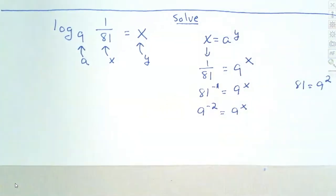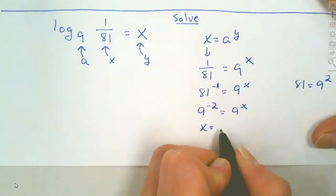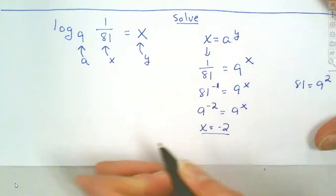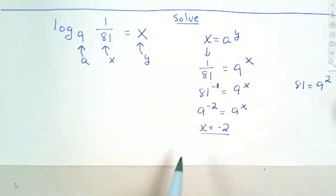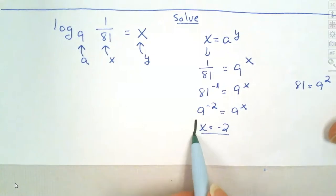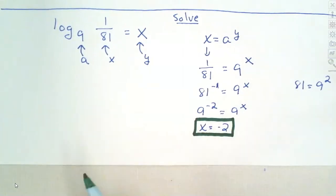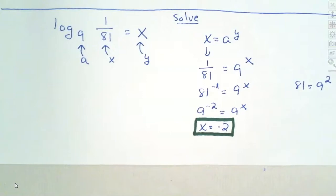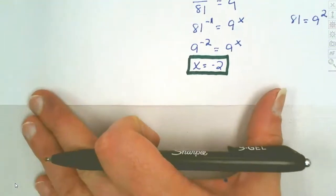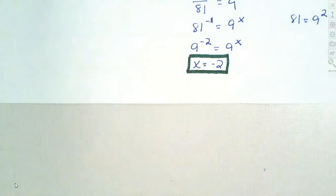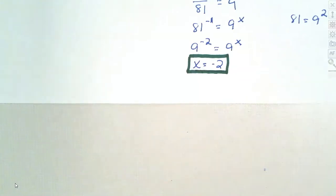The bases are the same, so x equals negative 2. This is almost exactly the same as question 40 on your practice final — just different numbers. Your practice final is already posted in Blackboard. You need to see the key on how these work out. Now we're going to look at some questions on our practice final just to remember how these are done.